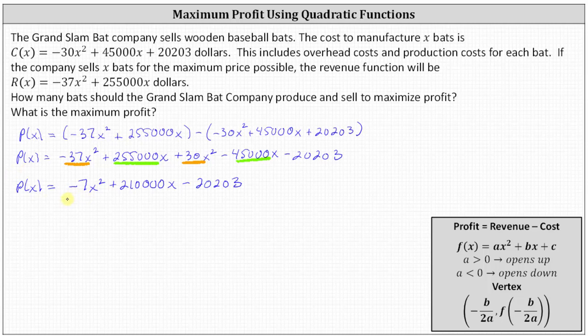Notice a profit function is a quadratic function where a, the leading coefficient, is equal to negative seven. We should recognize this means the graph is a parabola that opens down, meaning it looks something like this. And therefore, if we find the vertex, the X coordinate will be the number of bats they should produce and sell to maximize profit. And the Y coordinate or the function value of P of X would be the maximum profit.